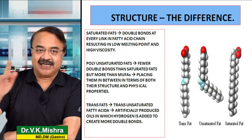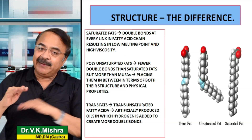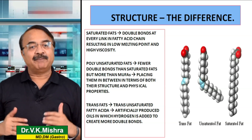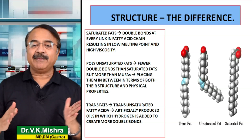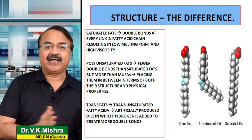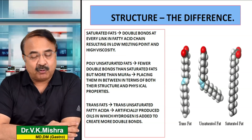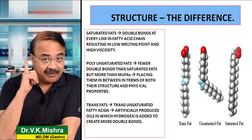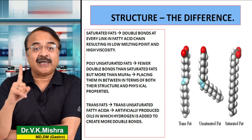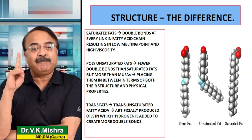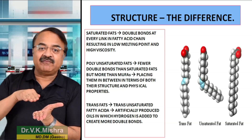जहाँ तक polyunsaturated fat का सवाल है, इनमें double bonds होते हैं जो mono से ज़्यादा होते हैं, लेकिन by and large double bonds की संख्या saturated से कम होती है. तो ये वास्तव में saturated and mono unsaturated fat के बीच की category में आते हैं. The last category is the trans fat, जिसे आपको समझने की जरूरत है. Trans basically unsaturated fatty acids होते हैं, लेकिन ये artificially produce किये जाते हैं, और hydrogen use की जाती है to create more double bonds. बहुत ज़्यादा double bonds create कर दिये जाते हैं trans fats में, इसी के चलते जो trans fats हैं उनको सबसे ज़्यादा खराब माना जाता है.